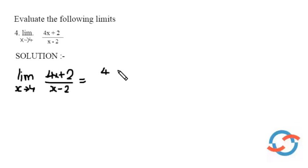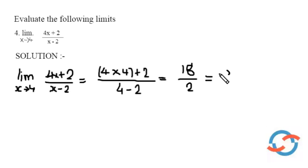Okay, it is 4 into 4 plus 2, by 4 minus 2. So, it is 4 times 4, 16 plus 2, 18. So, 18 by 2 equal to 9.